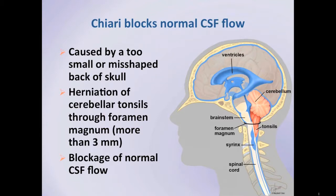Obstructed flow of spinal fluid is the critical identifying feature that makes Chiari malformation symptomatic. If it can be established that a patient has obstructed CSF flow, then they are a good candidate for surgery. If they have good CSF flow, then patients are not good candidates for surgery, and observation is recommended while alternative causes of symptoms are sought, such as migraine headache, tension headache, or other forms of headache.